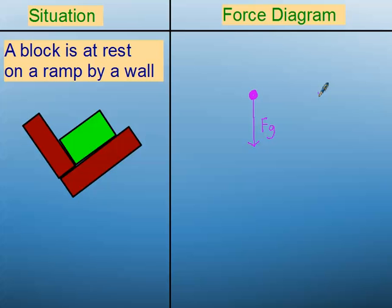For your force diagram, first of course we draw the force of gravity. Next I draw a little box around this thing so I can really focus in on what's actually touching it, and I see two different points of contact.